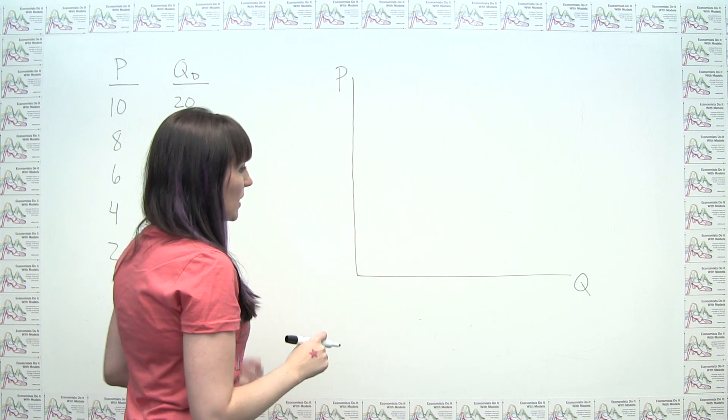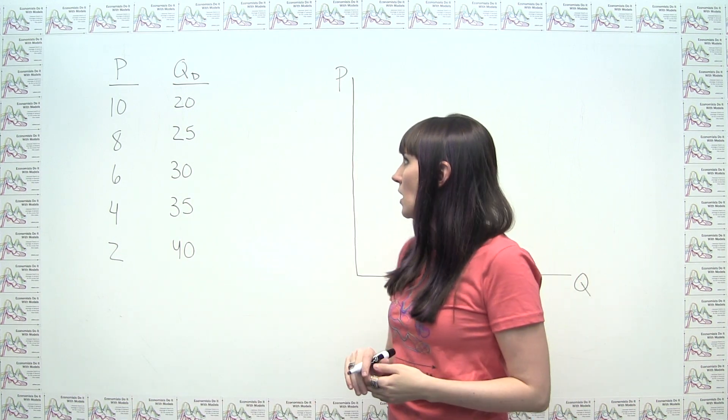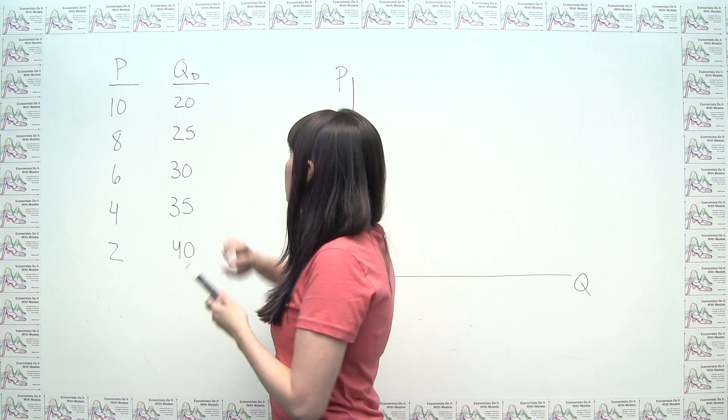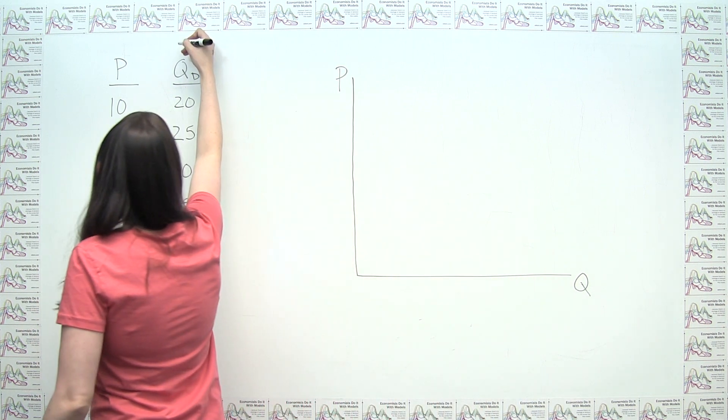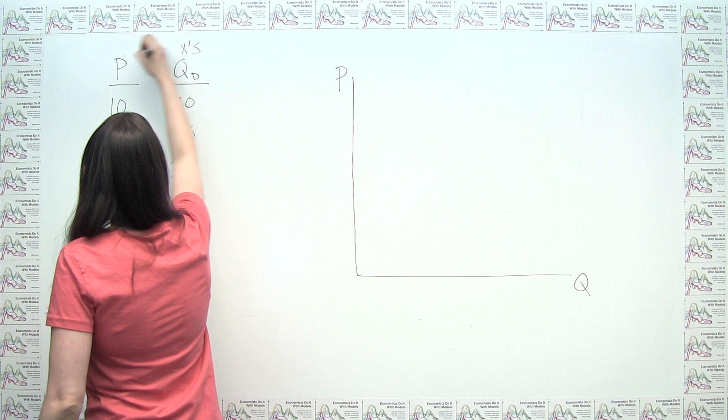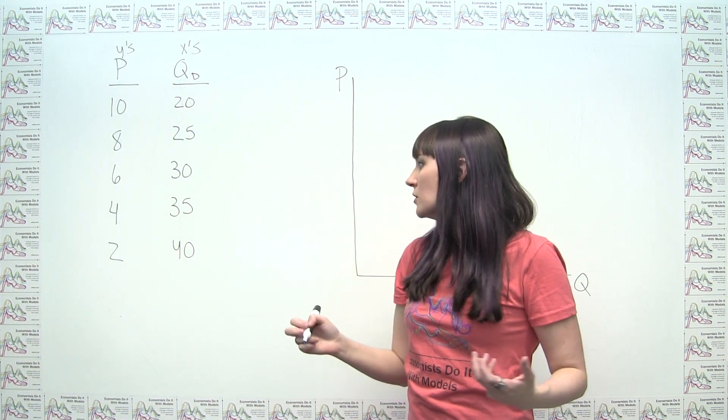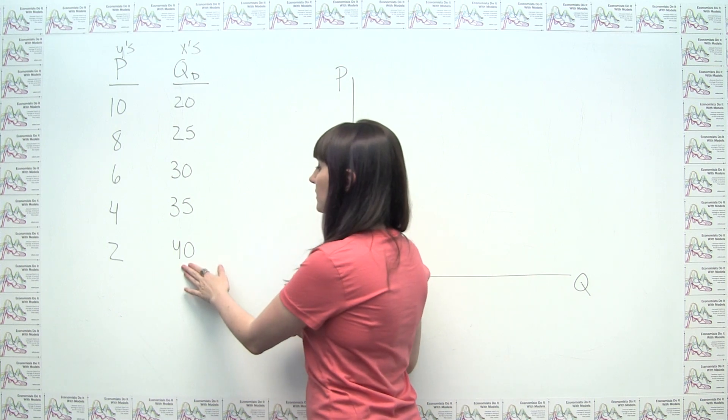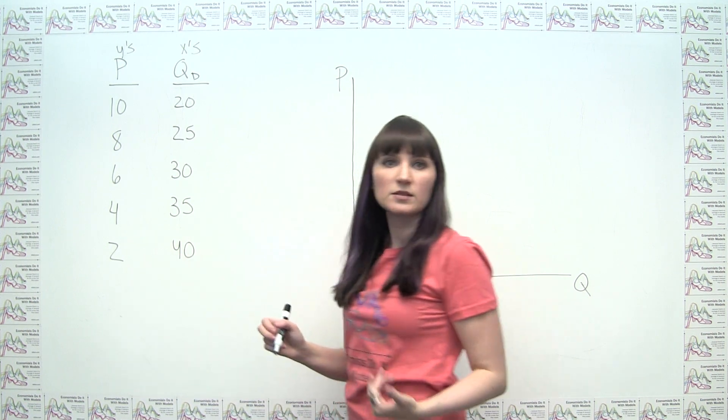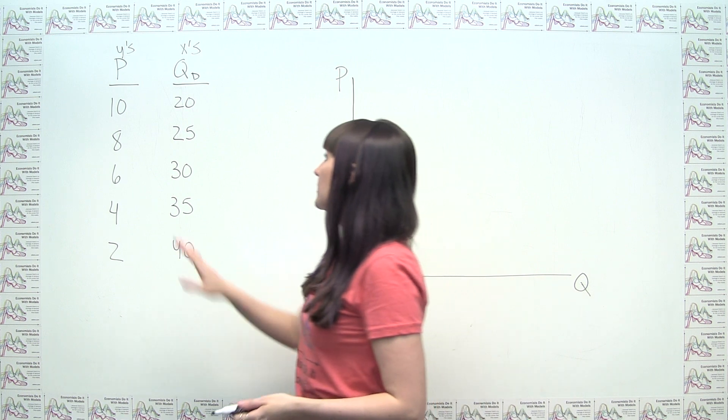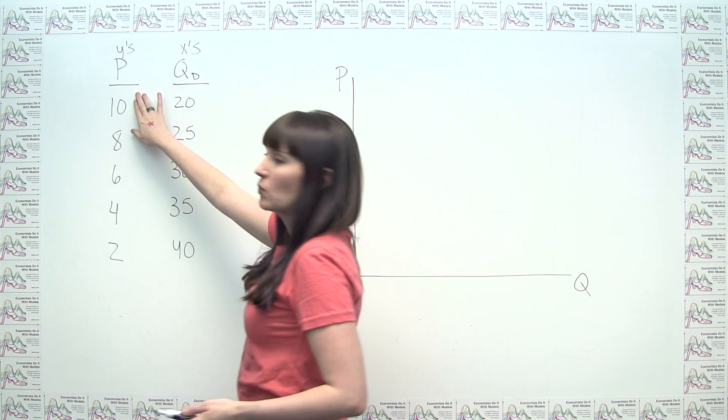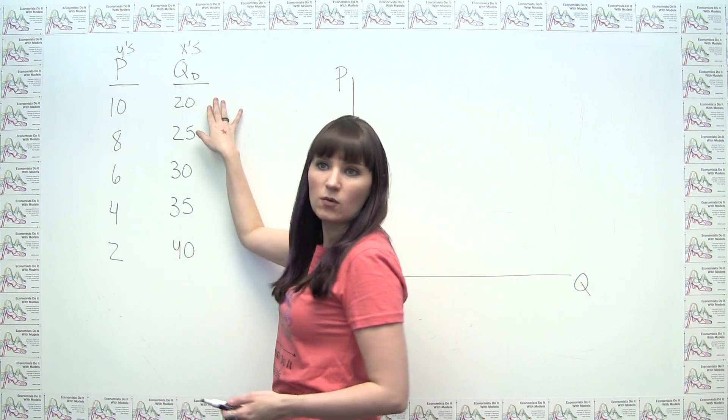So then it's just a matter of plotting these points properly. And we'll notice that these guys here are actually our x variables. I'll call these x's. And I'll call these y's. So when we want to plot, we want to make sure that we're plotting these as the x variables and these as the y variables. Even though often times when we see a demand schedule, we'll see price first and then quantity demanded.